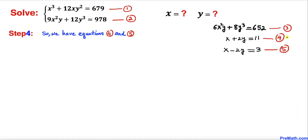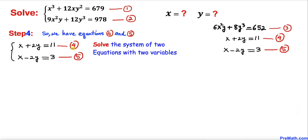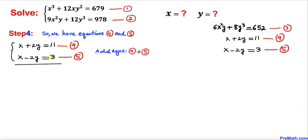Now let's focus on equations 4 and 5. We are going to solve this system of two equations with two variables using the elimination method. Adding equations 4 and 5: the +2y and −2y cancel, giving 2x = 14. Dividing both sides by 2, our x value turns out to be 7.